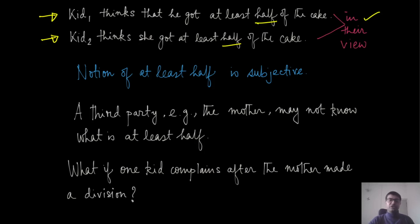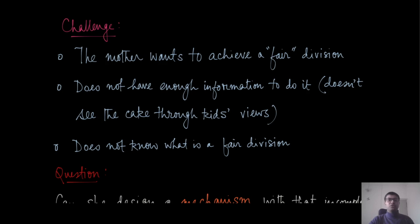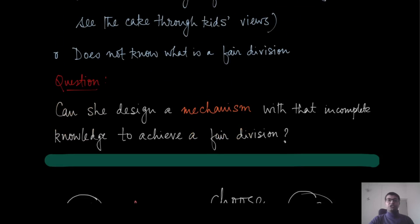The mother could have cut the cake herself and given each piece to each kid, but the trouble is that one of these kids may complain that the other got a larger piece. More succinctly, the challenge is: the mother wants to achieve a fair division of this cake, but she does not have enough information to do it. The question therefore is: can she design a mechanism — a protocol for cake cutting among these two kids — with that incomplete information to achieve a fair division?